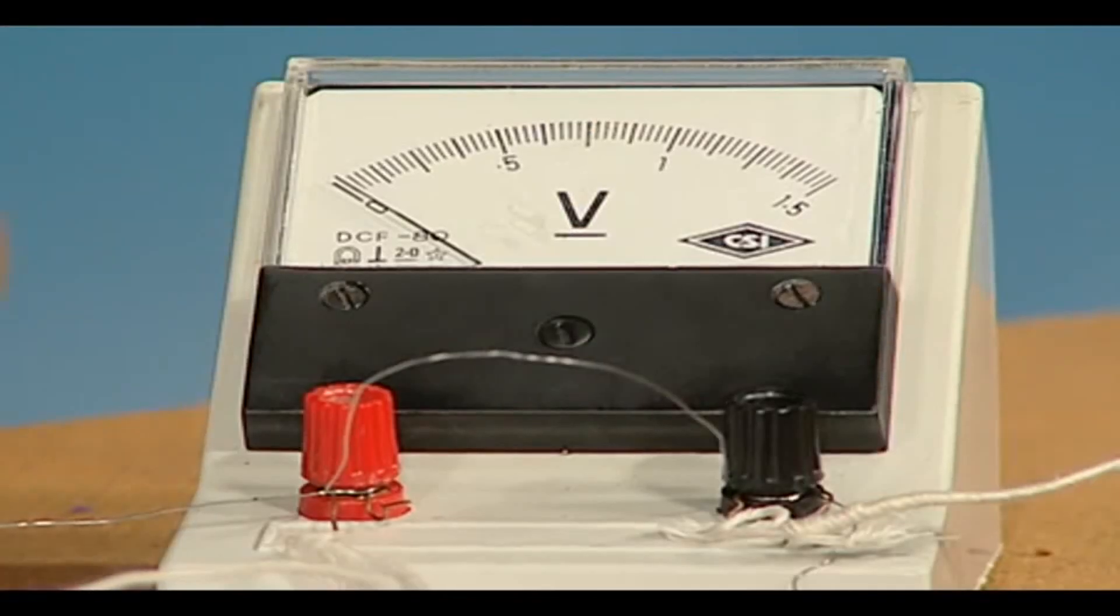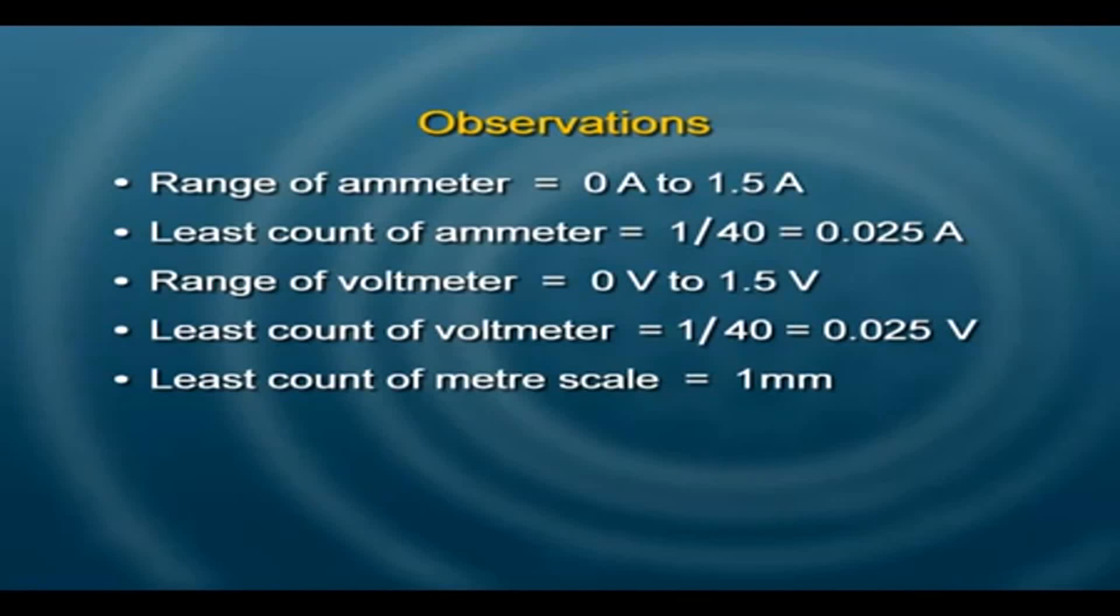Least count for the meter scale by which we measure the length of the resistance wire is 1 millimeter, and the length of the wire as we had checked out was 20 centimeters.